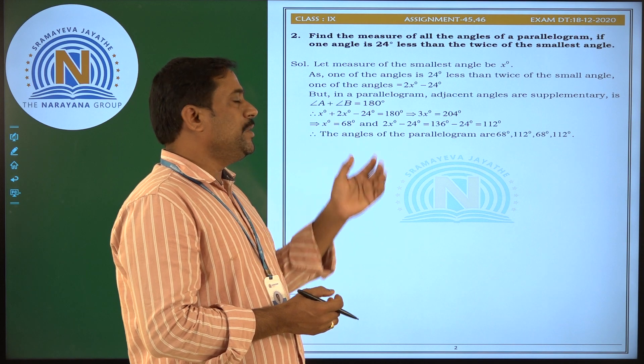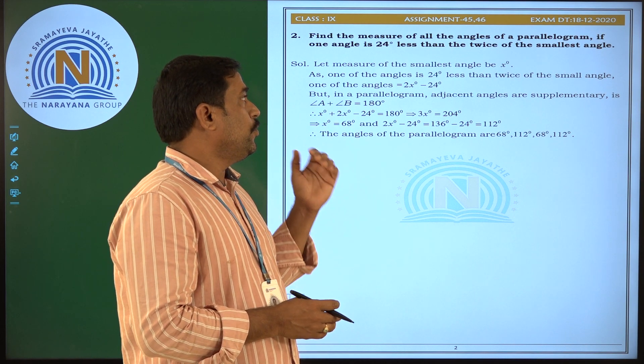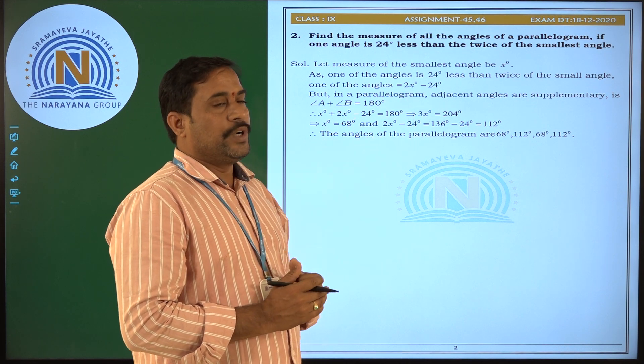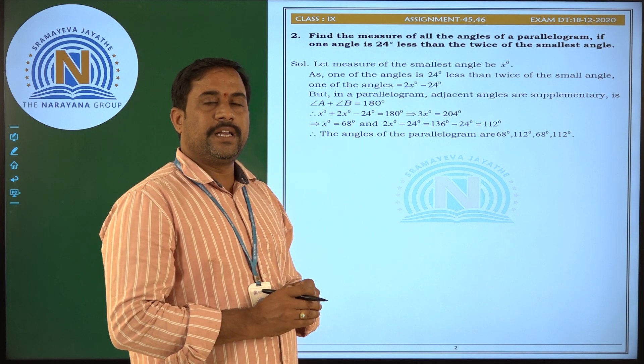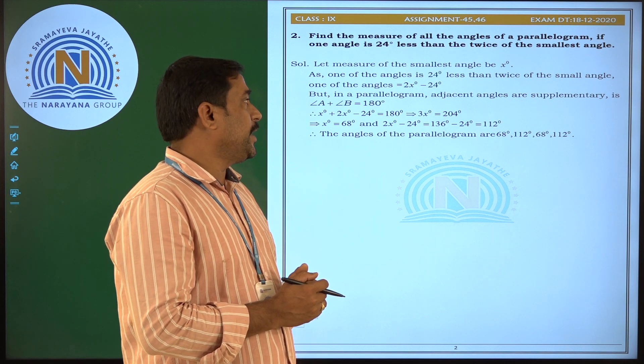So angle A plus angle B equals 180 degrees. One is x degrees, another is 2x minus 24 degrees. x plus 2x minus 24 equals 180 degrees, so 3x equals 204 degrees.